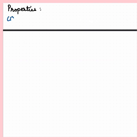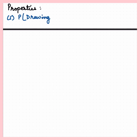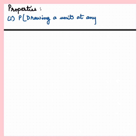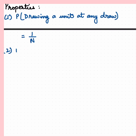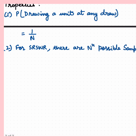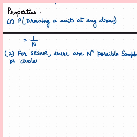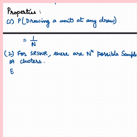Now let's understand a few properties. Property one: probability of drawing any unit at any drawing equals 1/N. Property two: there are N to the power n possible samples or clusters where each sample has a probability of 1/N to the power n of getting selected.